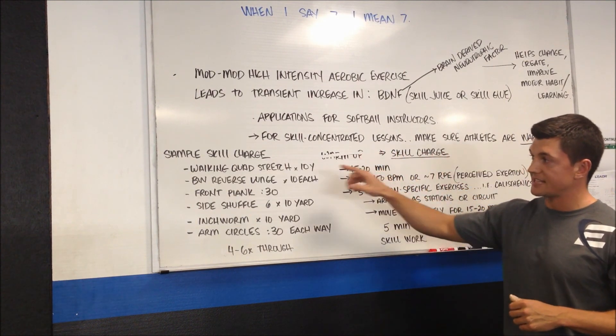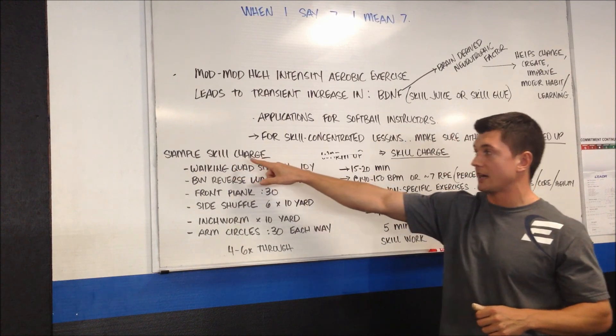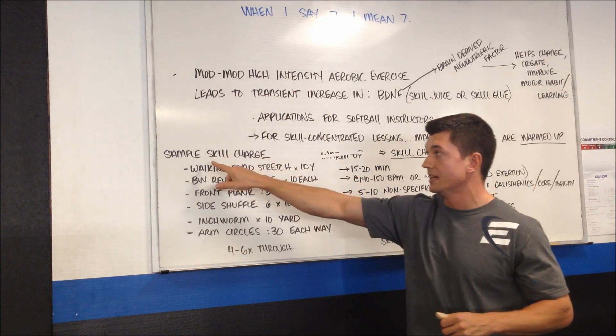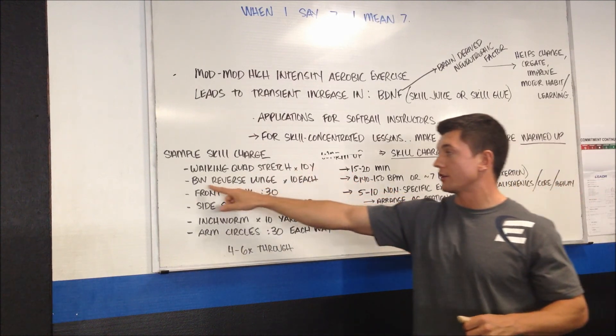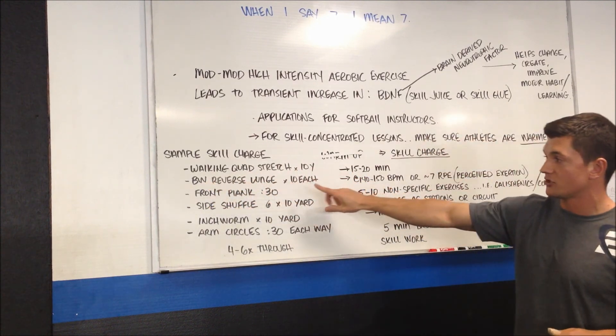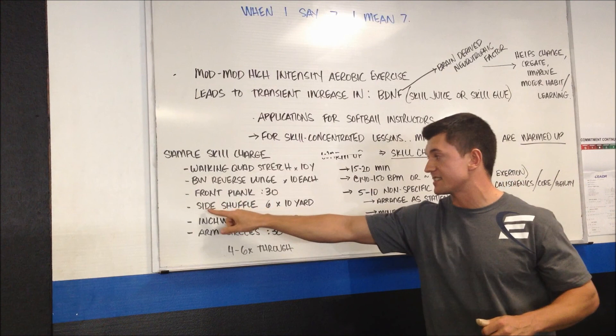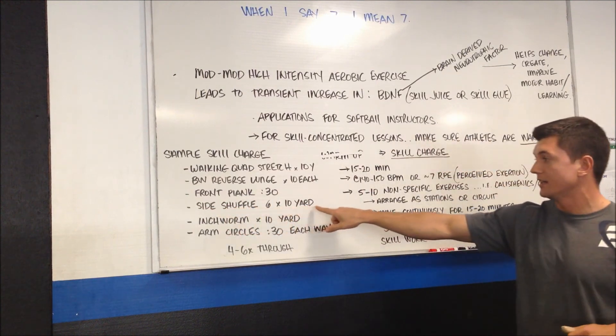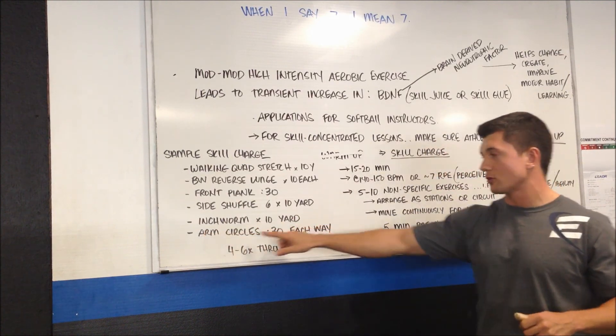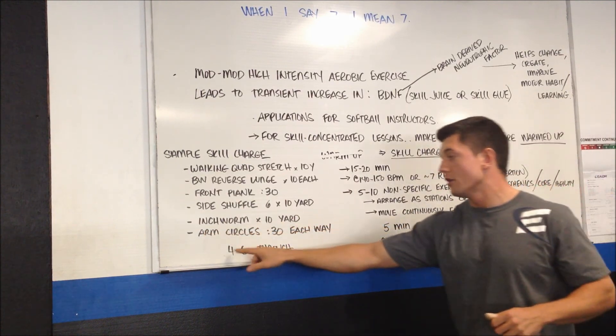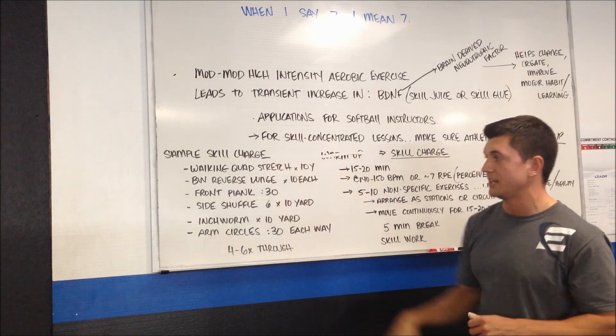A sample skill charge: We're going to have a walking quad stretch for 10 yards. Bodyweight reverse lunges, 10 on each leg. Front planks for 30 seconds. Side shuffling 6 times, 10 yards up and back. Inchworm times 10 yards. Arm circles, old school arm circles, 30 seconds each way. Four to six times through those stations.